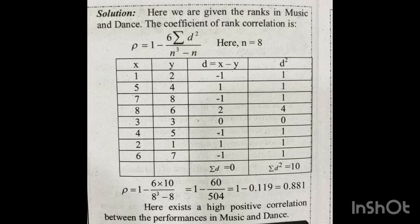Since rho equals 0.881, which is close to 1, we comment: there exists a high positive correlation between the performance in music and dance. This is a 4-mark question and is straightforward to solve using the Spearman formula. If you find this video helpful, please like it, support it, and subscribe to our channel. All the very best.